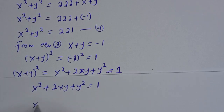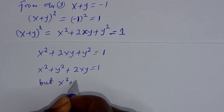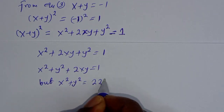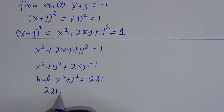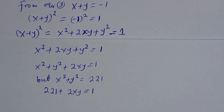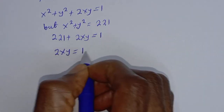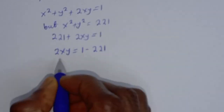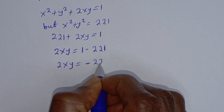Therefore x squared plus y squared plus 2xy equals 1. But from equation 4, x squared plus y squared equals 221. Substituting: 221 plus 2xy equals 1, so 2xy equals 1 minus 221.